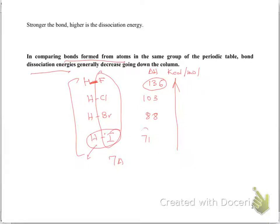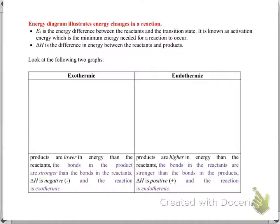The easiest bond to break is H–I, since it requires only 71 kilocalories per mole. In order for molecules to react, they must collide, and in the collision the kinetic energy they possess is used to break the bonds. However, not every collision between two molecules leads to a reaction — collisions must have the proper orientation and enough energy for the reaction to occur.